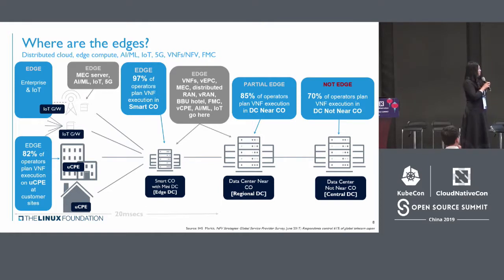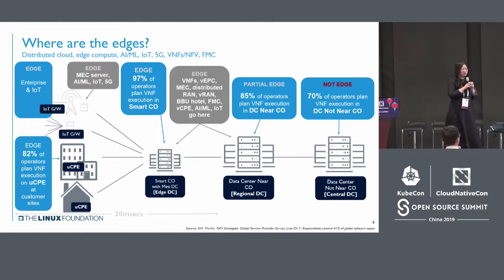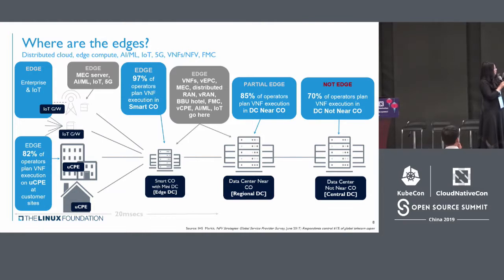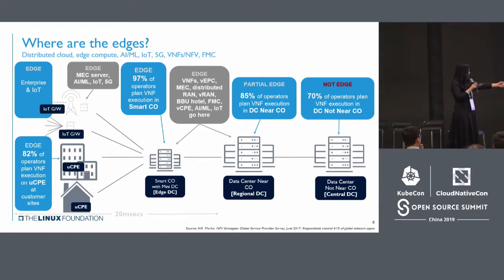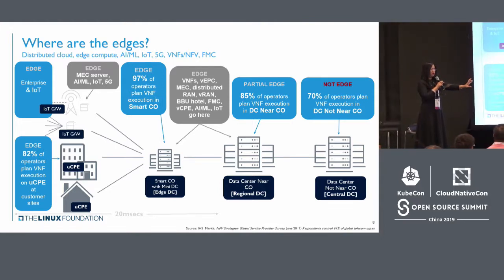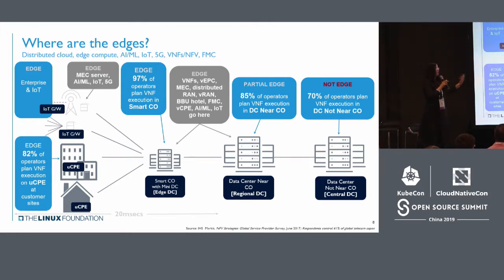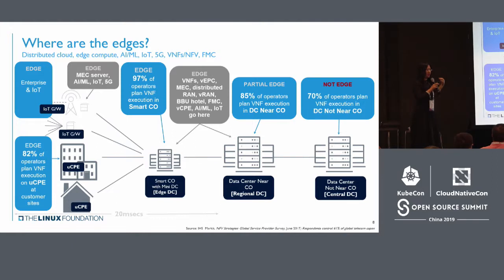People will ask: where are the edges and what is it? It's like an onion — you can know the deeper inside. You have IoT gateway, UCP, then SmartCO, NDC, and DC. Then you have the data center and regional DC. Below you have Edge Cloud, infrastructure service, local service, and IoT devices. All of these belong to edge computing.